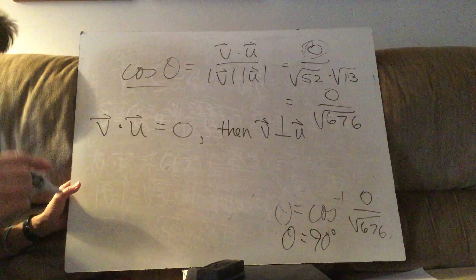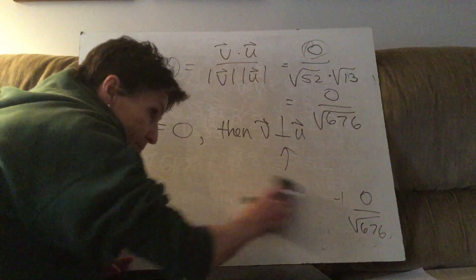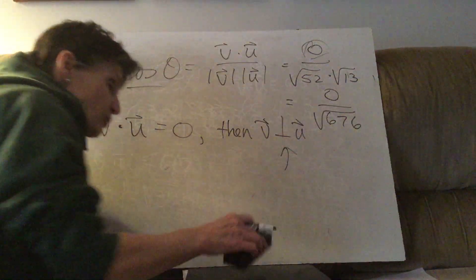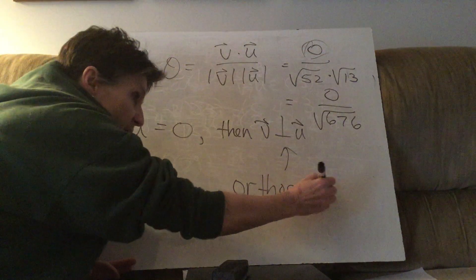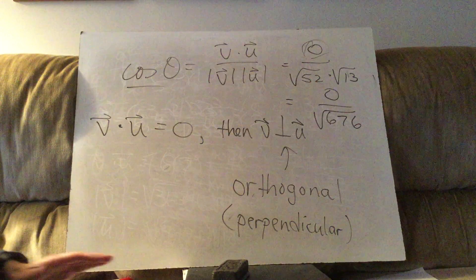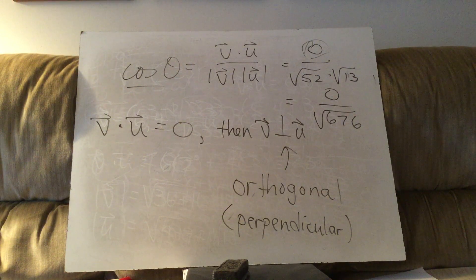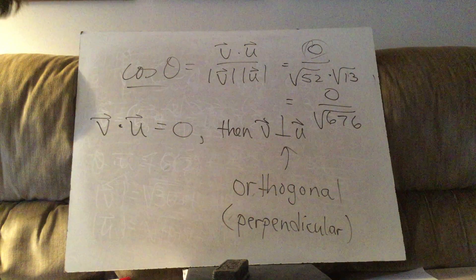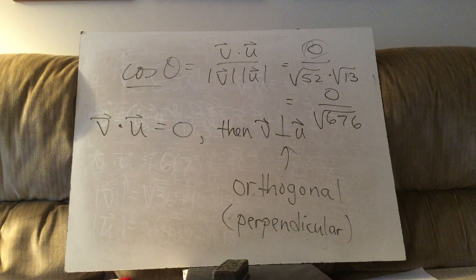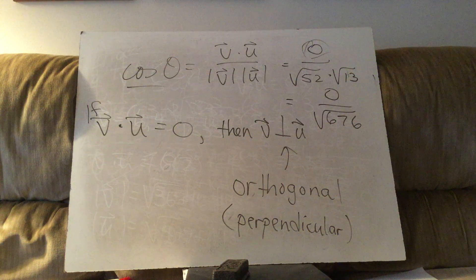One more piece of information: in geometry, forming a 90 degree angle means perpendicular. But in vector land, we use the word orthogonal. Orthogonal means the same as perpendicular. Just like we use the word scalar in matrix operations, we call perpendicular vectors orthogonal. So if the dot product is zero, v will be orthogonal to u every single time.